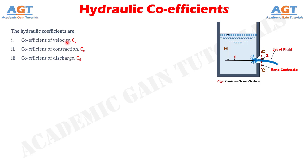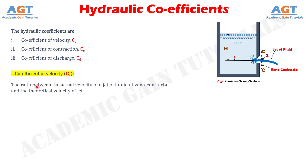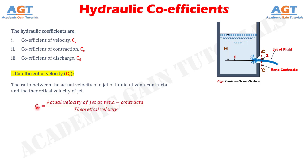Let's start by discussing about the coefficient of velocity. The coefficient of velocity is defined as the ratio between the actual velocity of a jet of liquid at Vena Contracta and the theoretical velocity of jet. It is denoted by CV, and mathematically, coefficient of velocity is given as CV equals to actual velocity of jet at Vena Contracta divided by theoretical velocity.